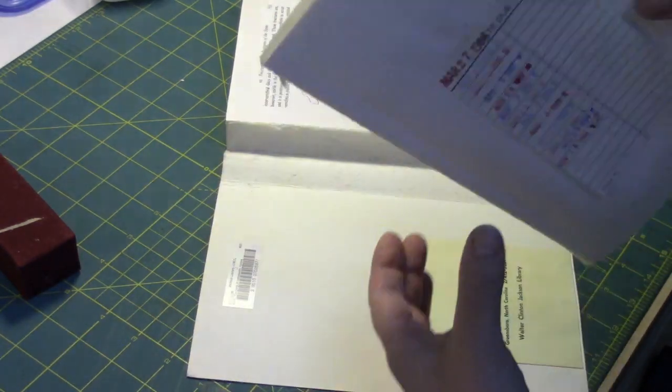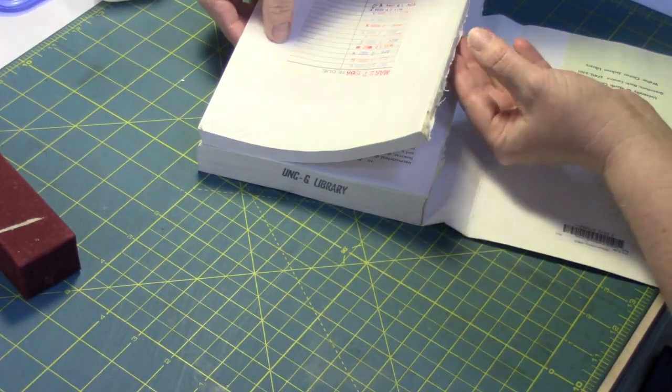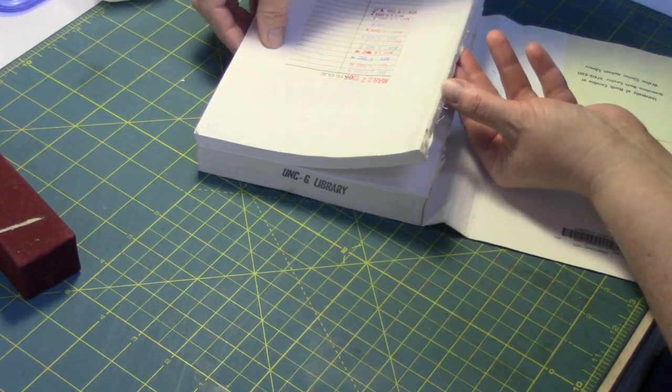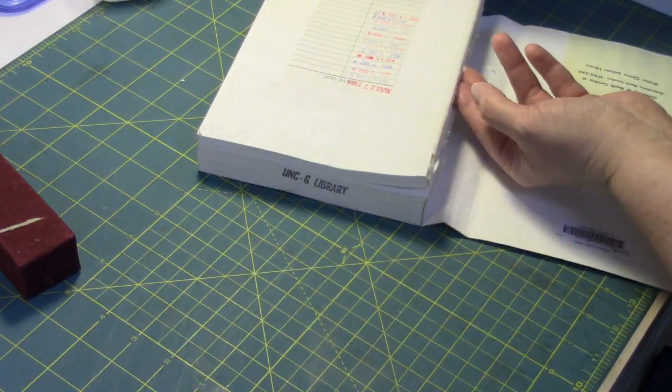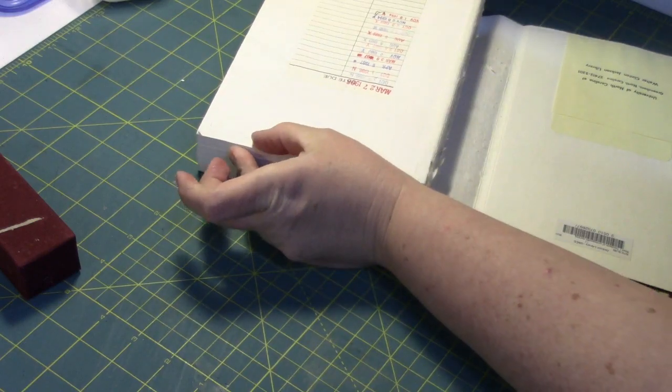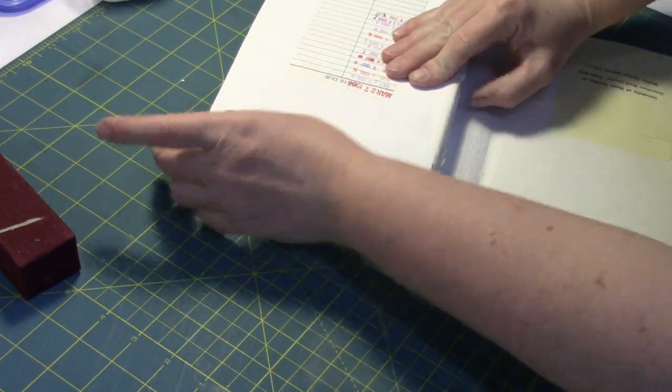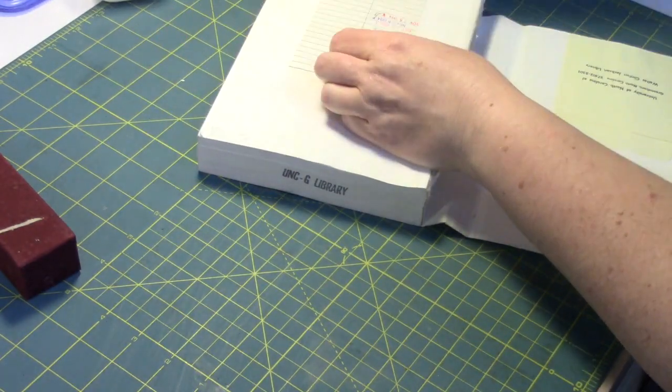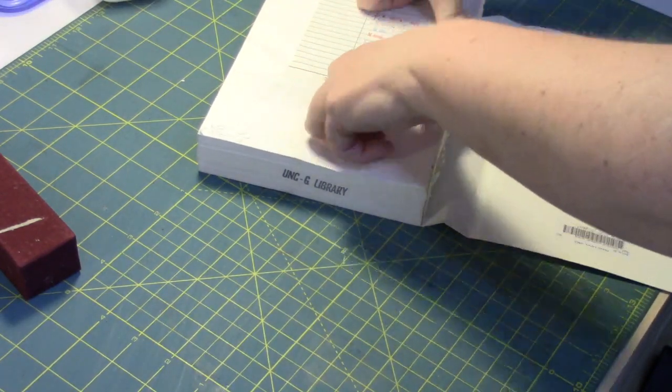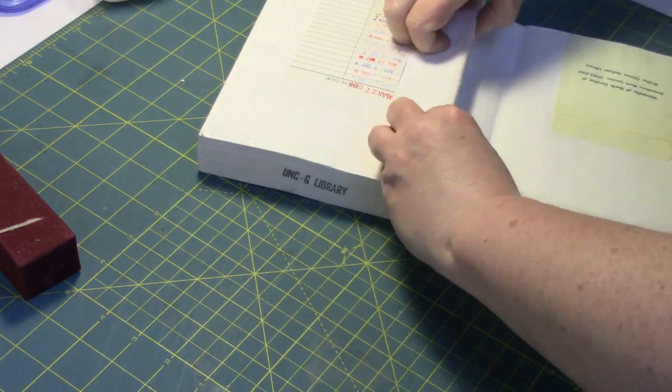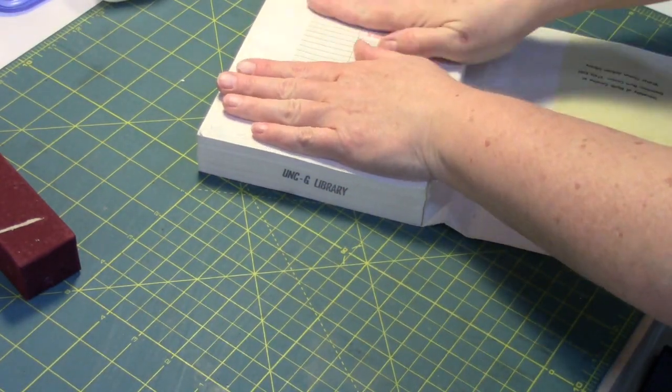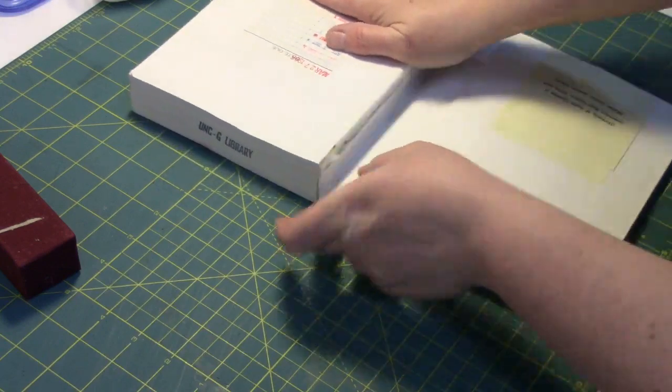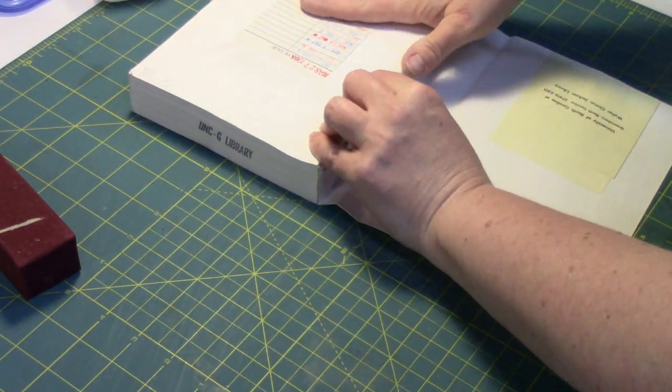Then what you want to do, I'm going to actually hold the spine up. I want to line up my fore edge and head of the book, the top of the book. Once I have those where I want them, then I'm going to apply pressure to the back here. You could at this point go ahead and put a heavy weight on it and let that part dry before you continue.